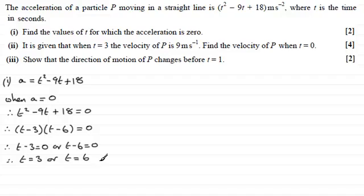Okay, so nice one there for part one. Now in part two, it says it is given that when t equals 3 the velocity of P is 9 meters per second. Find the velocity of P when t equals 0.